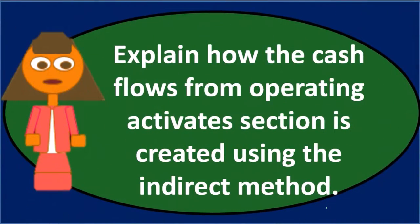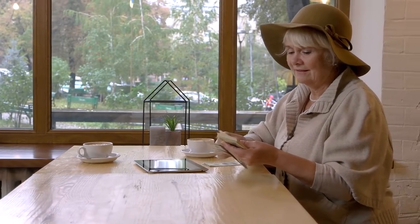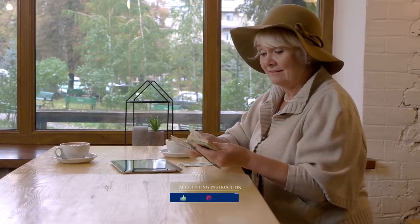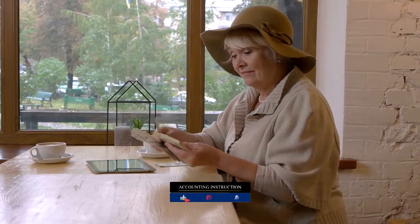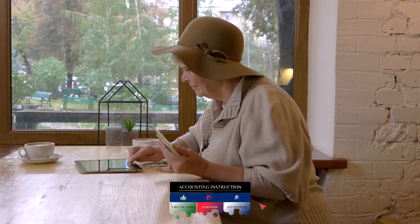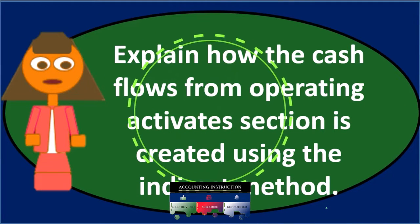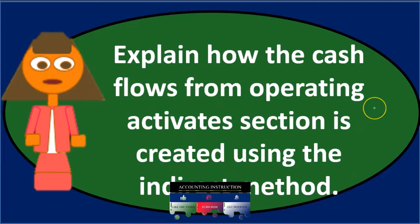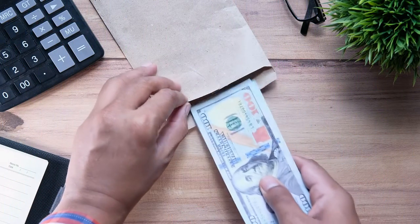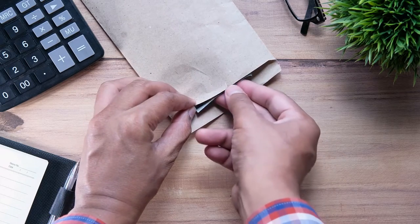When we think about indirect versus direct method, we're only focusing on operating activity — the financing and investing activities remain the same regardless of which method is used. The only other really acceptable method is the direct method. So those two methods only change the operating activities and have no effect on financing or investing activities.